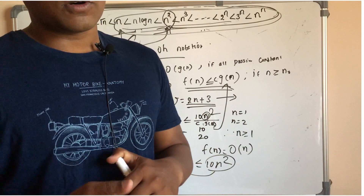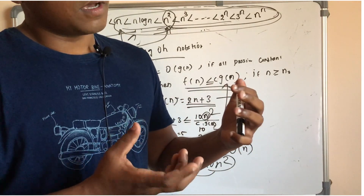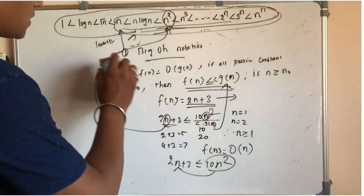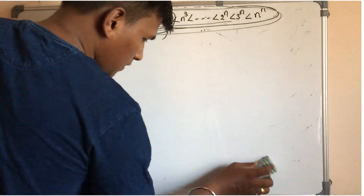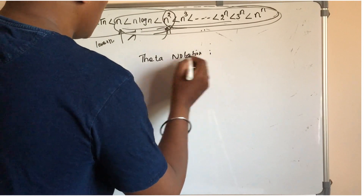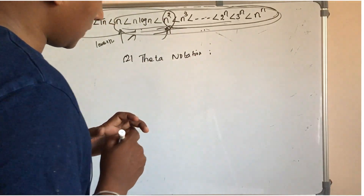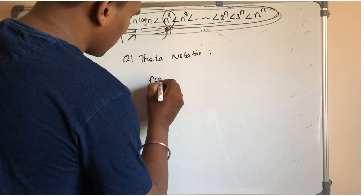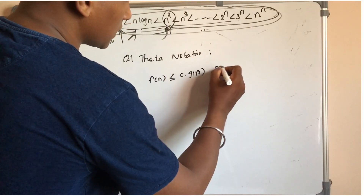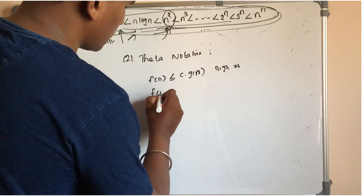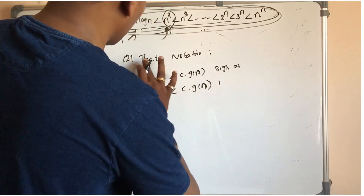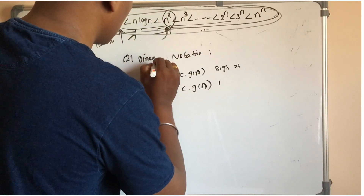The Big O notation and the omega notation — if you calculate the theta notation, you can calculate theta notation. The definition is the same structure. The difference is: for Big O notation, f(n) is less than or equal to c into g(n). For omega notation, f(n) is greater than or equal to c into g(n). That is the difference — this is the omega notation.